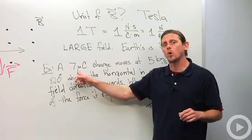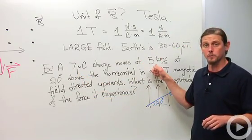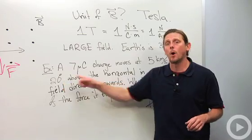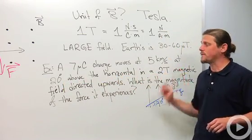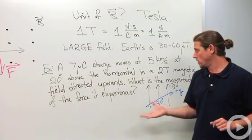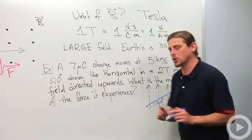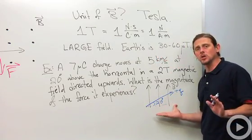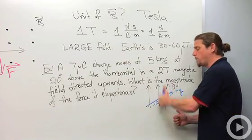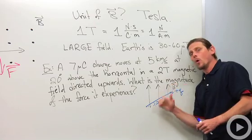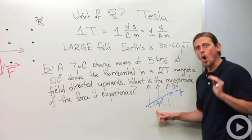Suppose that I've got a 7 microcoulomb charge and it's going to move at 5 kilometers per second at 20 degrees above the horizontal. And it's moving that way in a 2 tesla magnetic field that's directed upwards. And I want to know the magnitude of the force that it experiences. So let's go ahead and look at this. The best thing to do when approaching a problem like this is to make a diagram first. I've got the magnetic field pointing up and I've got my velocity, which is directed 20 degrees above the horizontal.